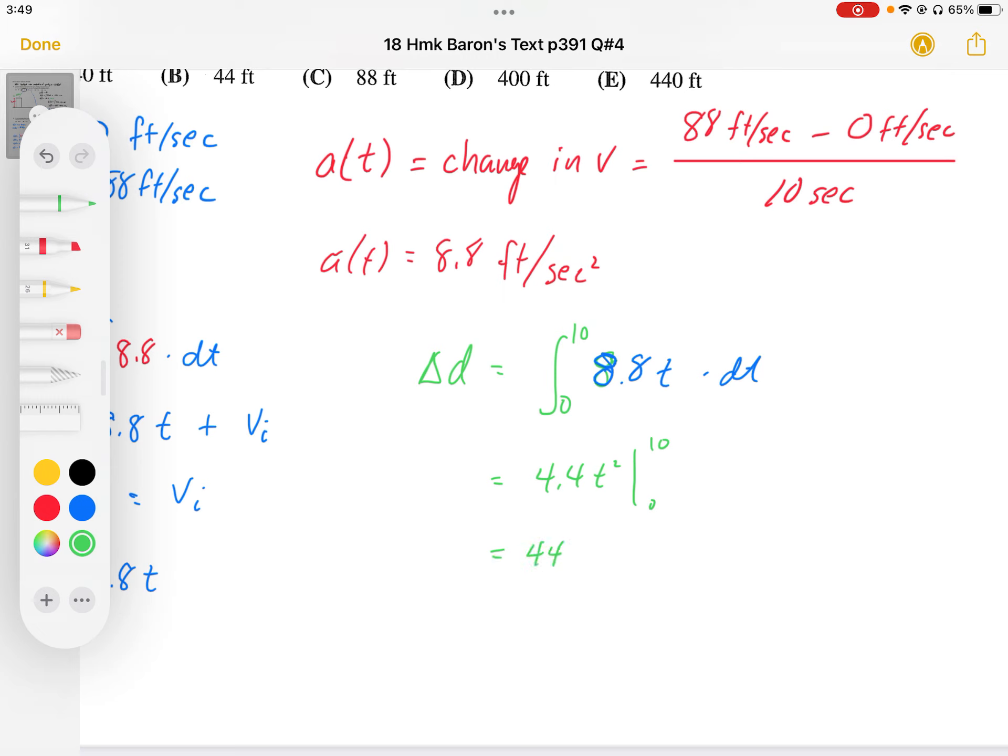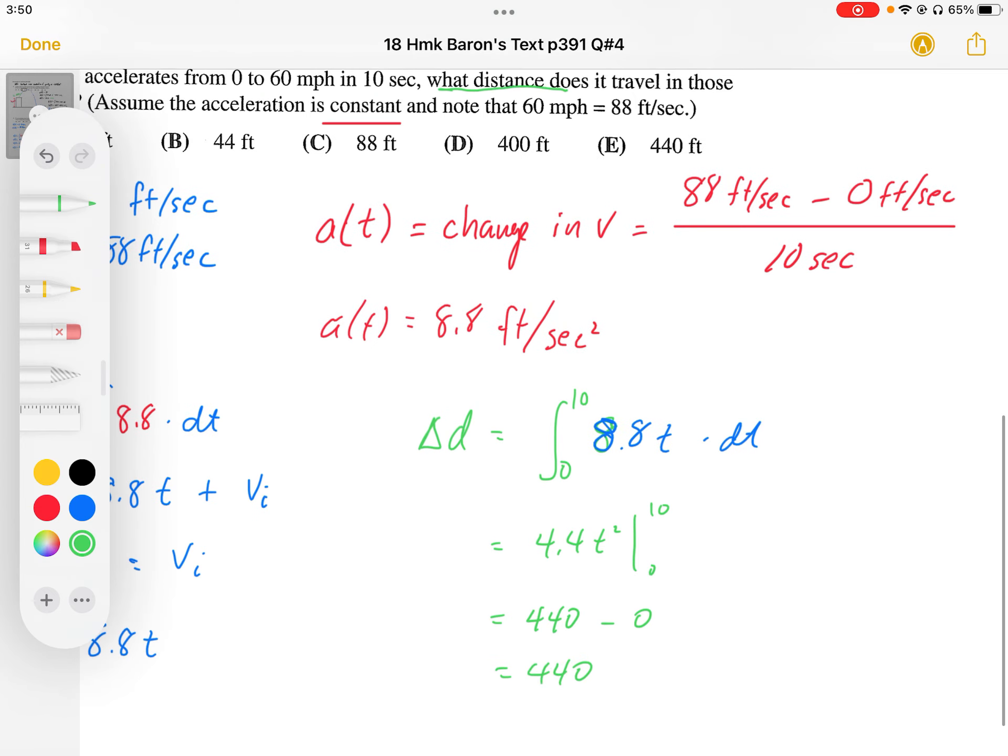So it's going to be 440 minus 0, or 440 feet. So the answer is e.